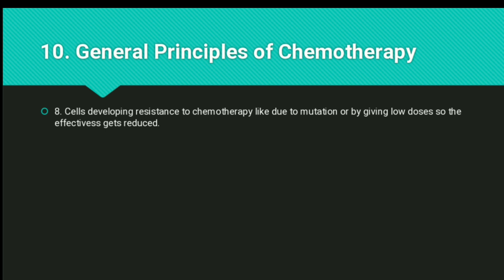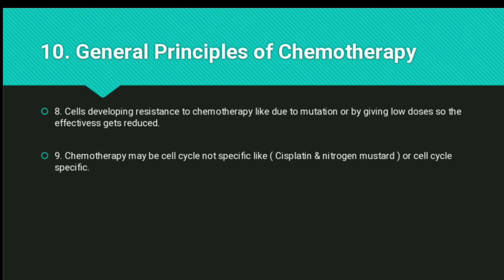The eighth principle is that cells can develop resistance to chemotherapy due to mutation or the administration of low doses, reducing the drug's effectiveness. This reinforces the earlier point: giving low doses allows the body to develop tolerance, so higher doses must be given.